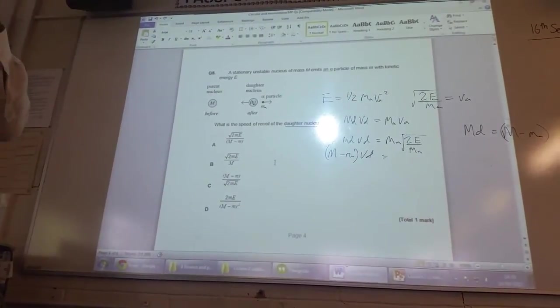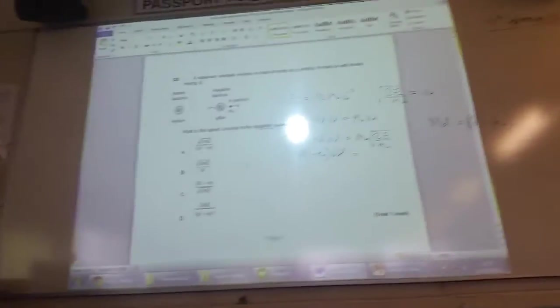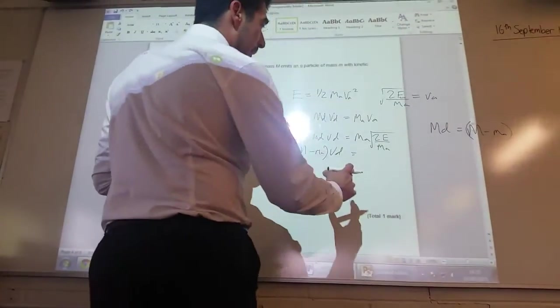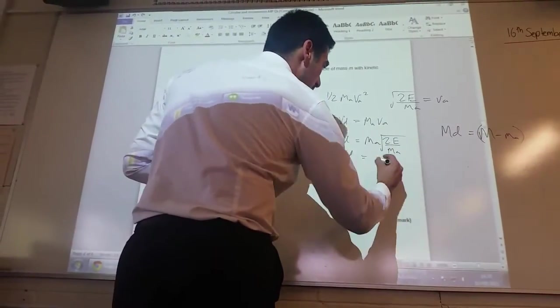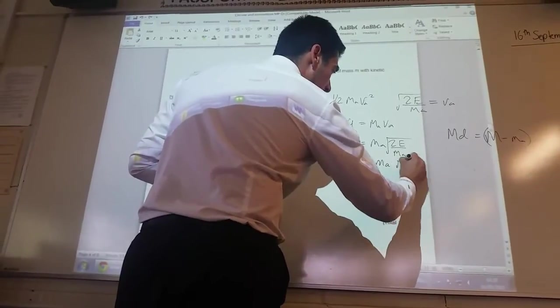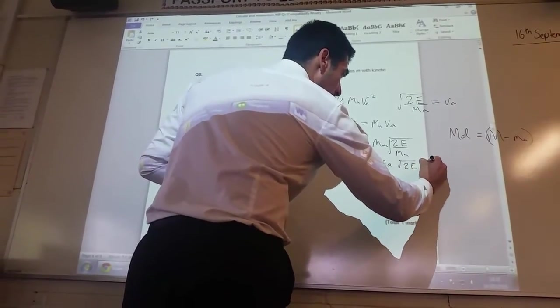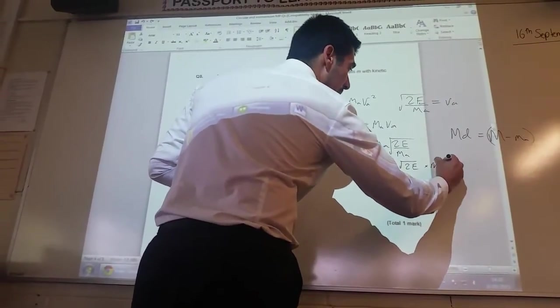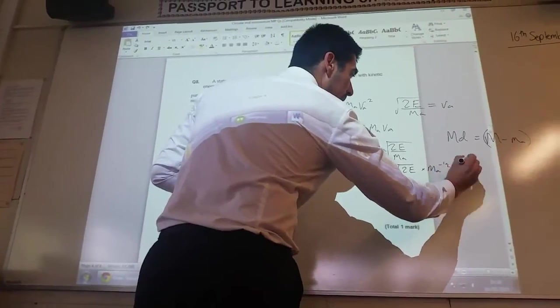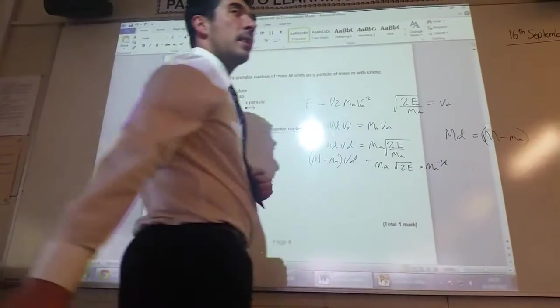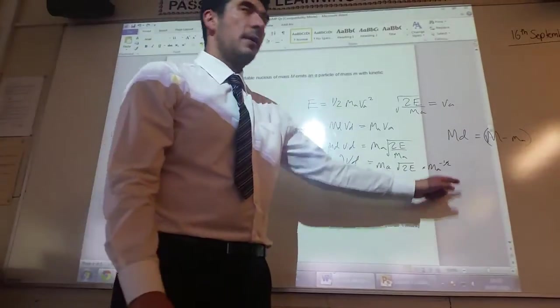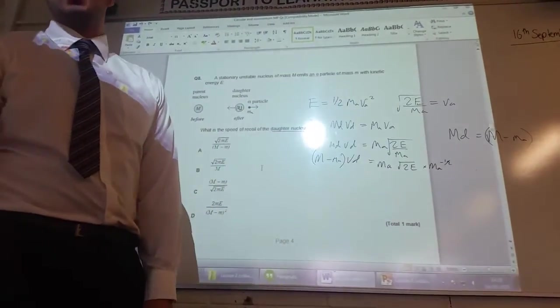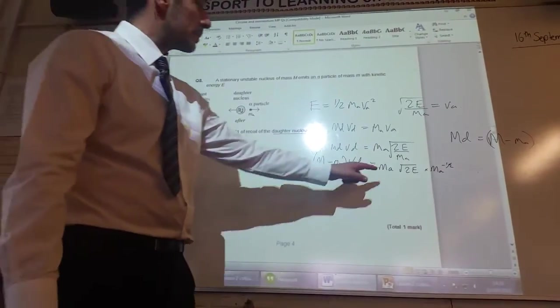Now I need to start thinking about rules of indices, which will help me to solve this. So I'll put all this onto one line. MA, root 2E, multiplied by MA to the power of minus a half. That's the power of one, that's the power of minus a half. When you multiply things together, you add the indices together, so this becomes to the half.